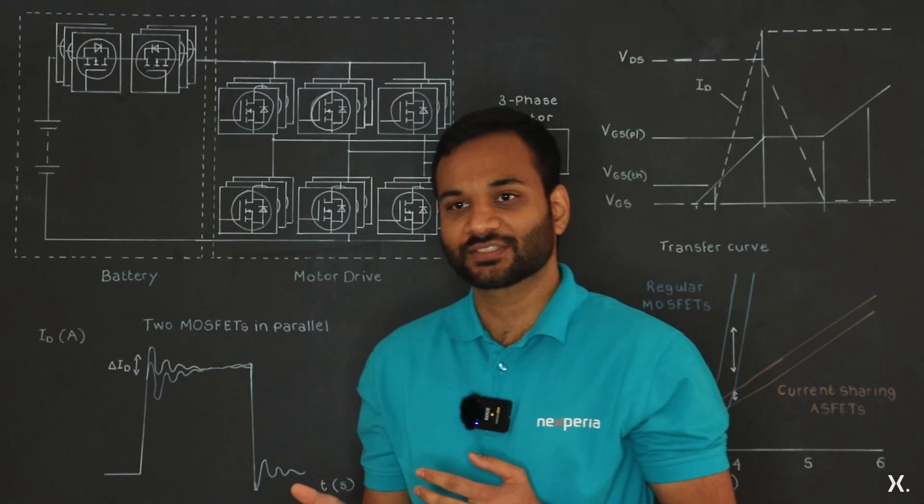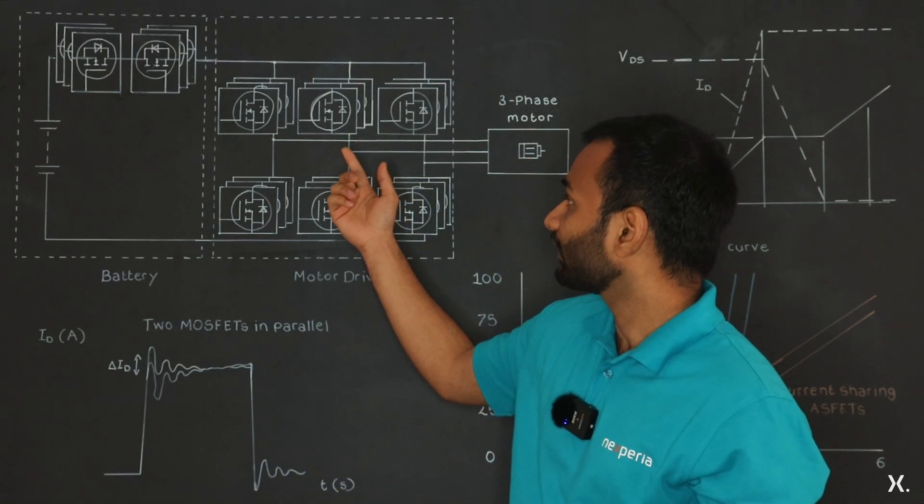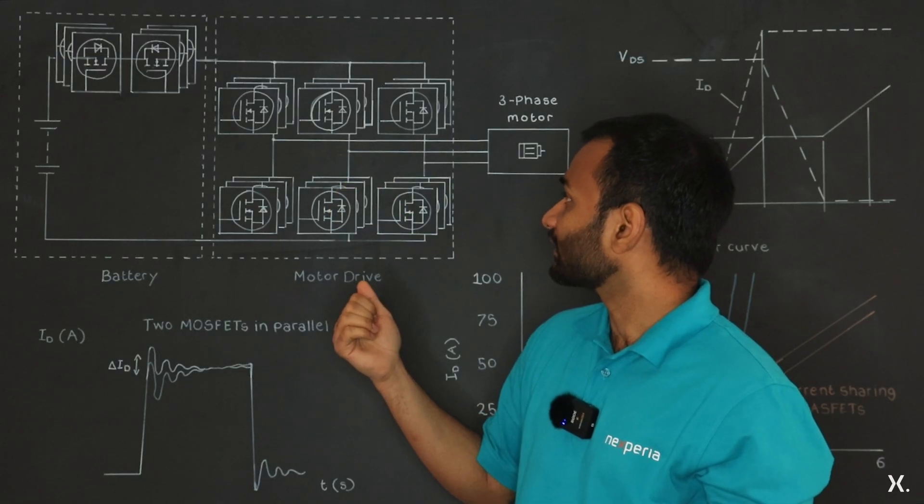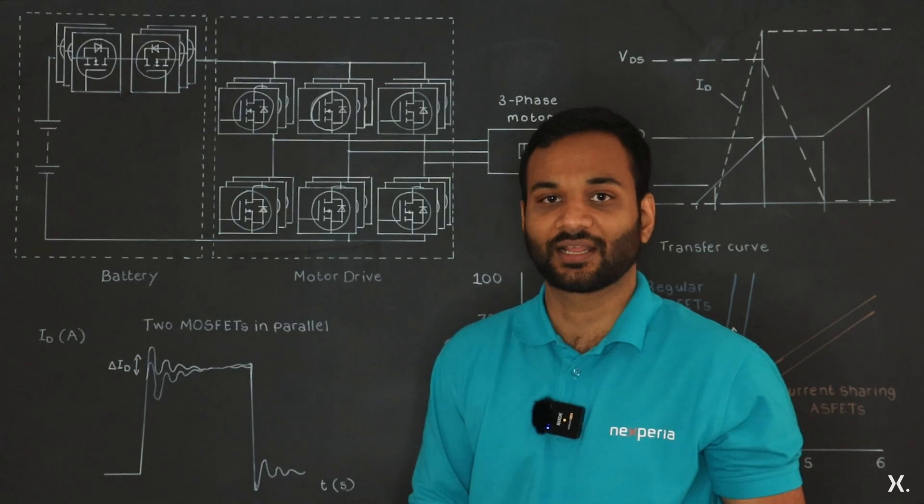But paralleling MOSFETs can be tricky. This is because one of the MOSFETs in parallel can conduct earlier, heat up faster and stress the system. The system then loses efficiency and reliability.